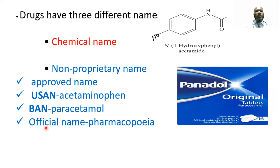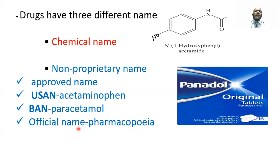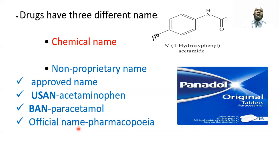We also have the official name, which is similar to the approved name. When the approved name is introduced into the pharmacopoeia, it is considered the official name. The official name contains the same name as the approved name; the only difference is that in the official name, the drug has been introduced into the official publication book — the pharmacopoeia.